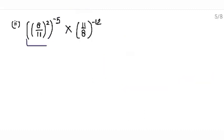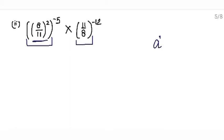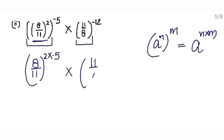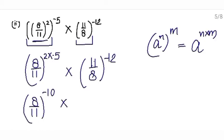Now the next part. Firstly you will solve this part, then this part, then you will overall evaluate it, and then you will find its reciprocal. This is in the form of a raised to the power n raised to the power m, so we will multiply the powers. Write the base once: 8 upon 11, and multiply the powers: 2 multiply minus 5. Multiply 11 upon 8 raised to the power minus 12. This is 8 upon 11 raised to the power minus 10, multiply 11 upon 8 raised to the power minus 12.